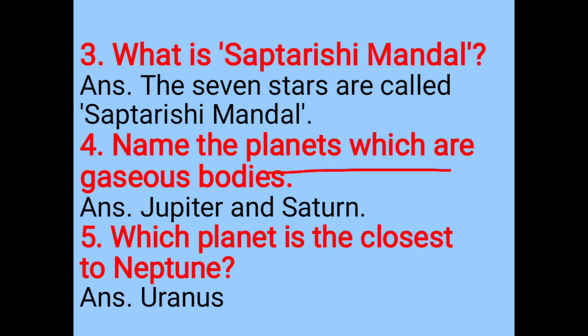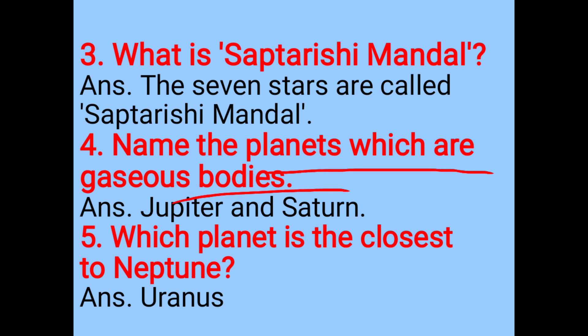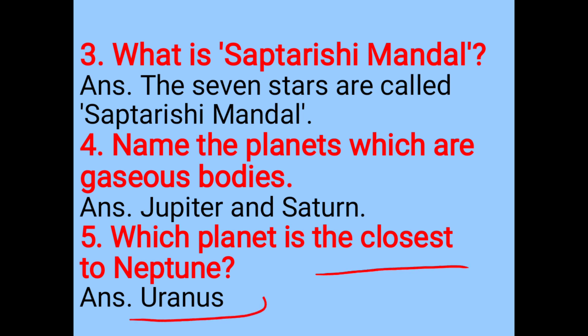Name the planets which are gaseous bodies. Jupiter and Saturn are gaseous bodies. Which planet is coldest? Uranus is coldest, followed by Neptune.